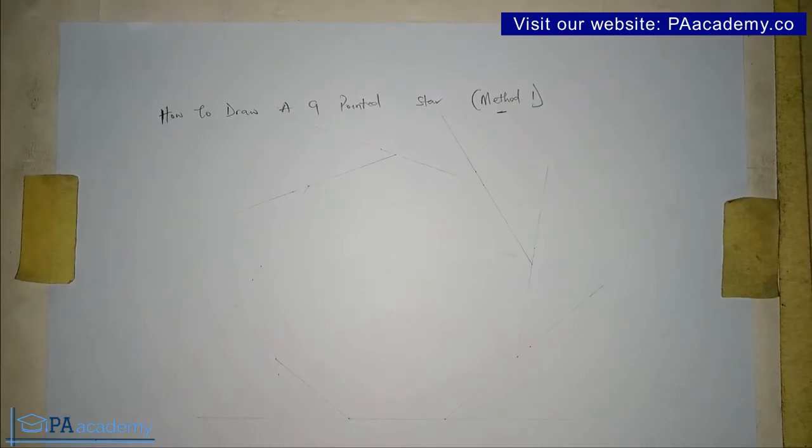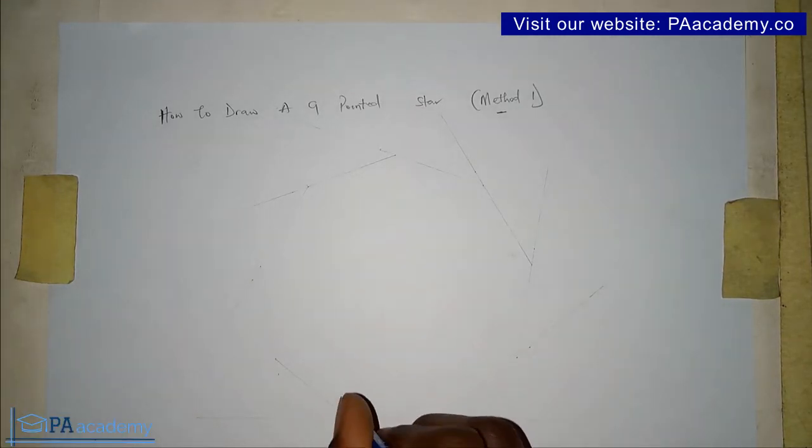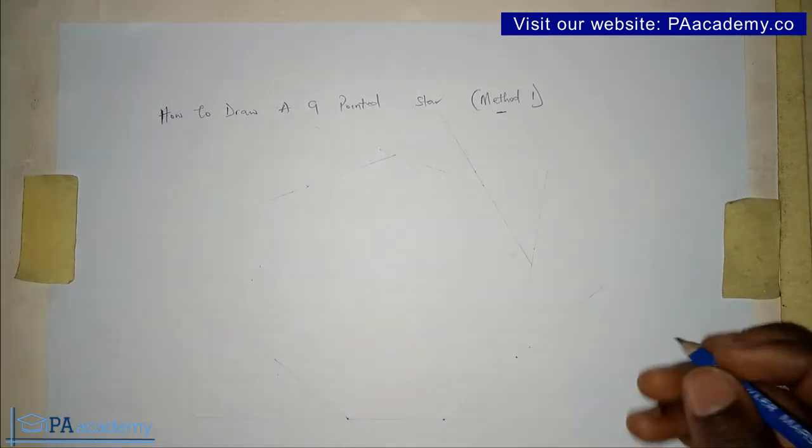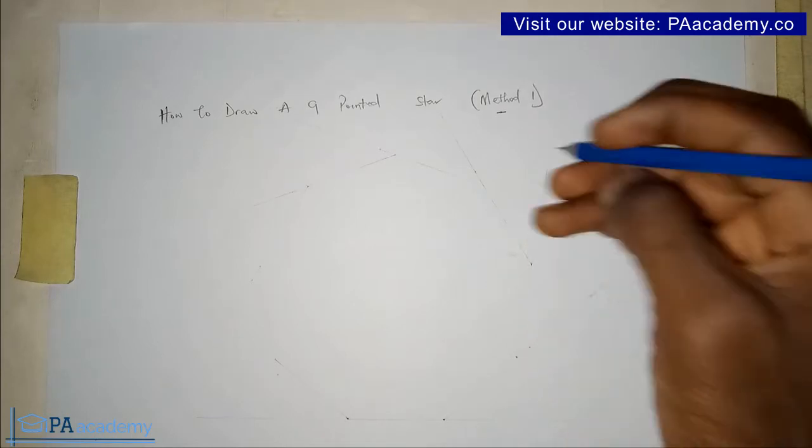Because what we actually need are the vertices. So now let's go ahead and identify or mark the vertices from the nonagon. All these points here are the vertices, so all these points that I'm just marking so that you can see it properly, they represent the vertices.